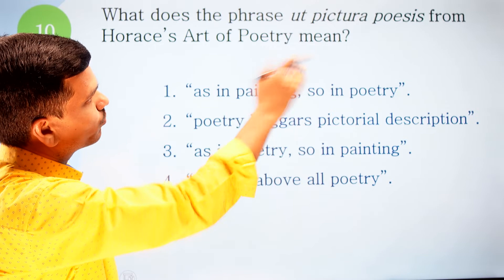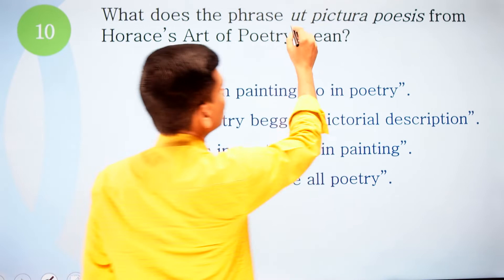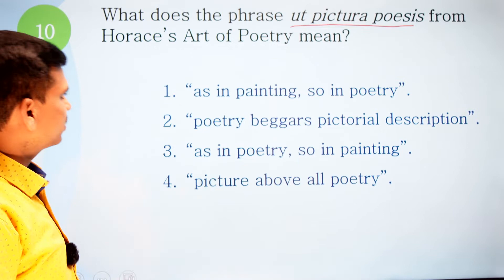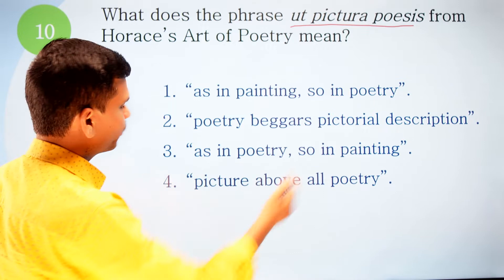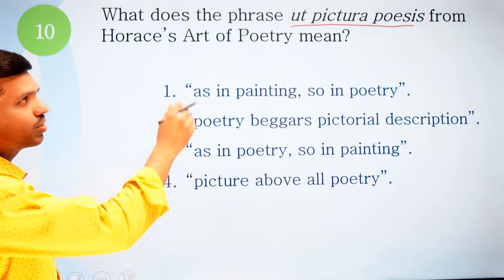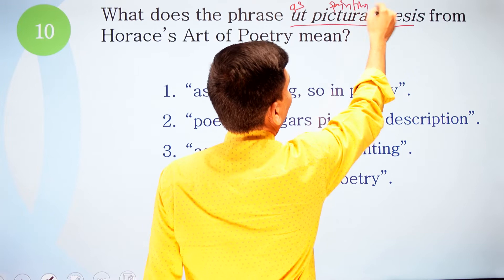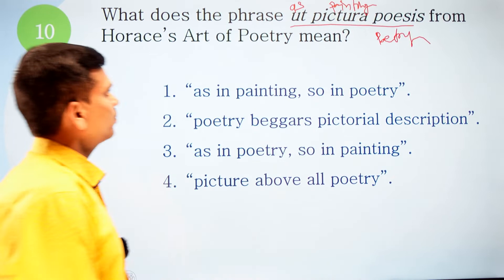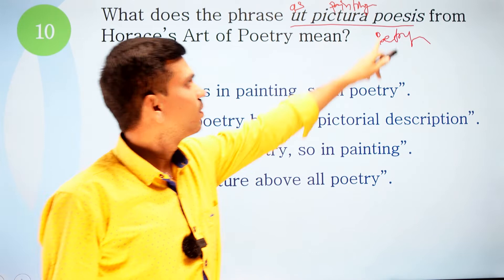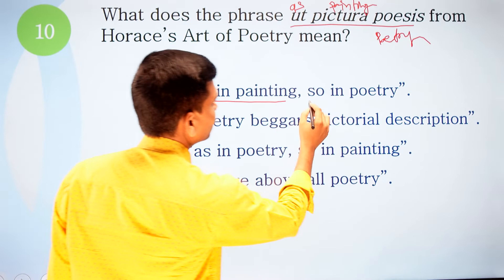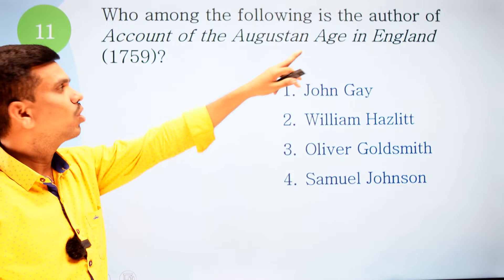Question ten: What does the phrase 'ut pictura poesis' from Horace's Ars Poetica mean? Options: one, 'as in painting, so in poetry'; two, 'poetry beggars pictorial description'; three, 'as in poetry, so in painting'; four, 'picture above all poetry.' It is simple — 'ut' means 'as,' 'pictura' means painting, 'poesis' means poetry. So the correct option is number one: 'as in painting, so in poetry.'